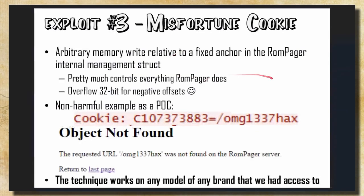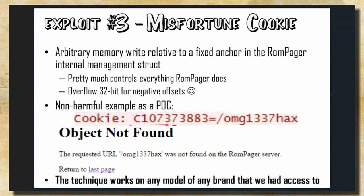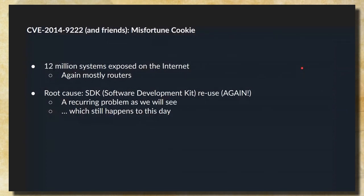Here's a slide from their presentation: arbitrary memory write relative to a fixed anchor. You send a cookie with a memory address like 0x10737388 where you write, and the value set in the cookie — 0x1337 hex — is the value written there. You send an HTTP request with this cookie and write to that memory address. It couldn't be nicer as a vulnerability. 12 million systems were exposed at the time of discovery, mostly routers. The root cause is the same: reuse of a vulnerable SDK — a recurring problem that still happens today.